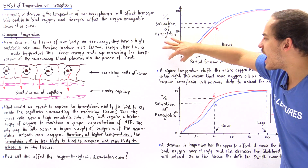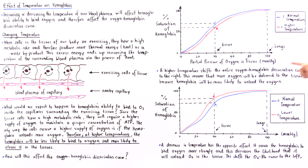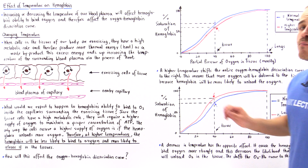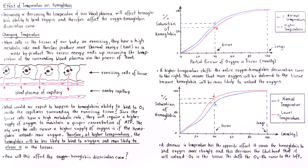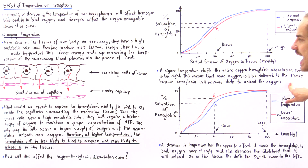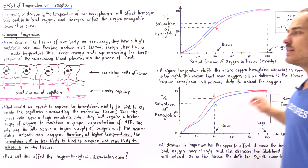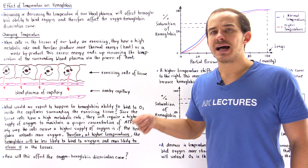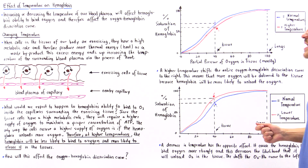A higher temperature shifts the entire oxygen-hemoglobin dissociation curve to the right. This means that more oxygen will be delivered to the exercising tissue because hemoglobin will be more likely to unload oxygen and less likely to bind to it.